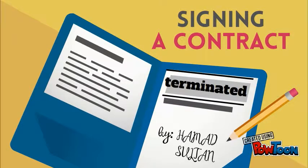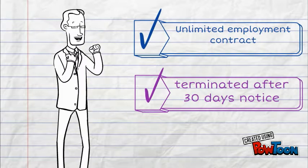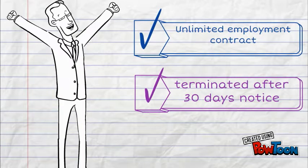As Sultan has a limited employment contract, he is terminated after 30 days of notice.